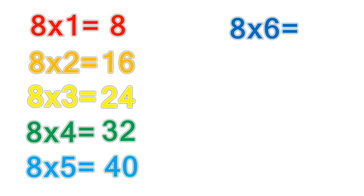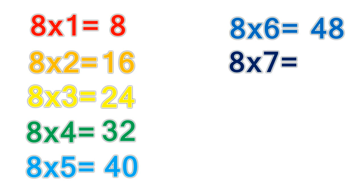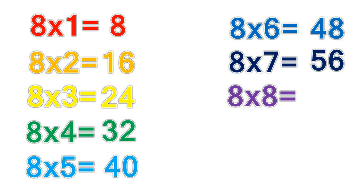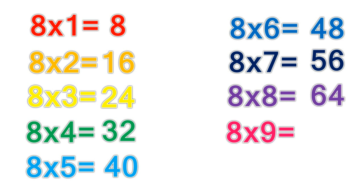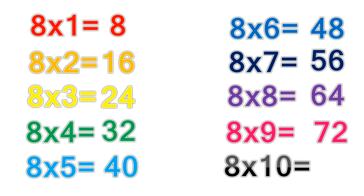8 times table. 8 times 5 equals 40. 8 times 6 equals 48. 8 times 7 equals 56. 8 times 8 equals 64. 8 times 9 equals 72. 8 times 10 equals 80.